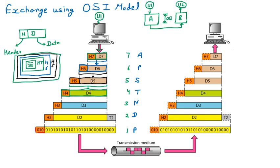The transport layer adds header H4 — yet another envelope is applied. This complete package is forwarded to the next layer. It becomes D3, the data arriving at the network layer. The network layer then adds its own header H3, so one more envelope is applied.